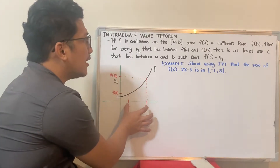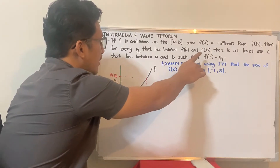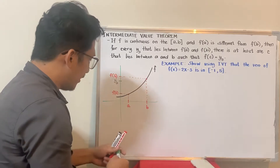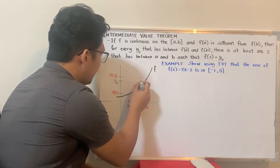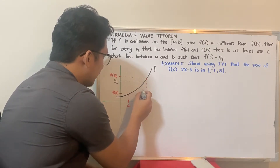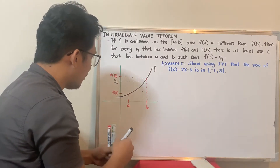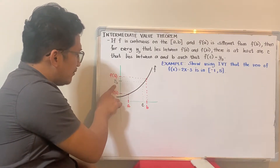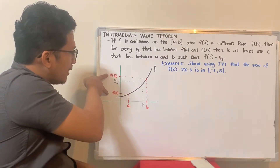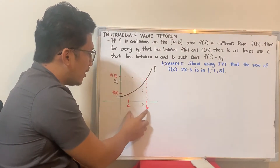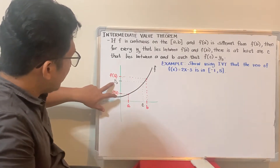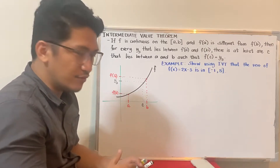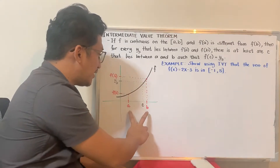Using the function, there is a value of c in between a and b such that f(c) is equal to y-sub-3. In other words, if y-sub-3 is between f(a) and f(b), then the corresponding x-coordinate c is also in between a and b.